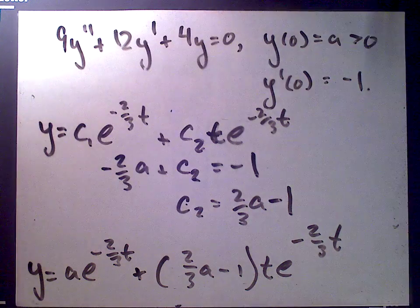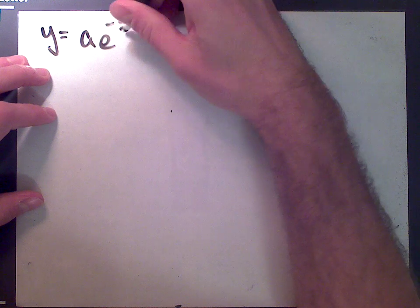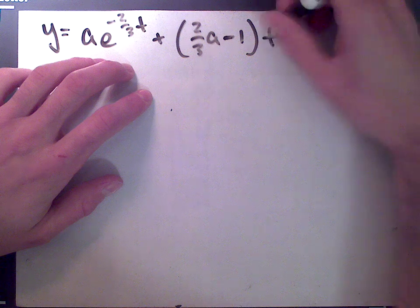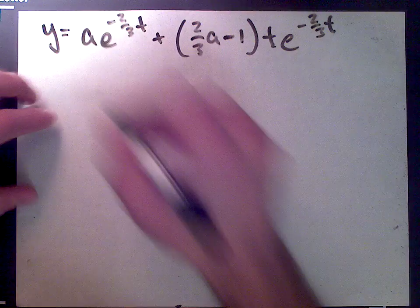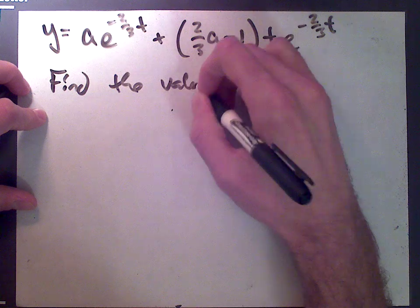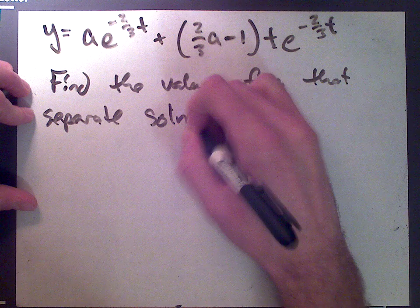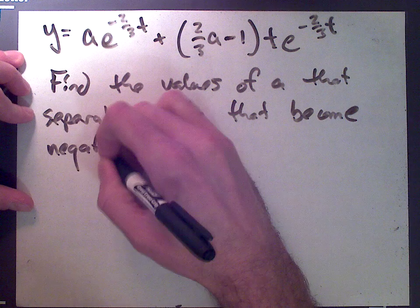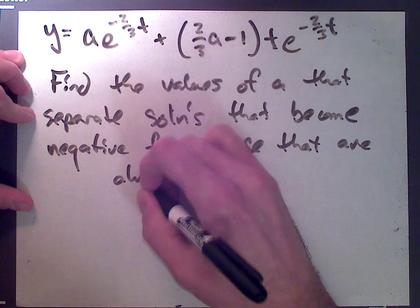Part B asks us to find the critical values of a that separate solutions that become negative from those that are always positive. Restating the solution: y = a·e^(-2t/3) + (2a/3 - 1)·t·e^(-2t/3).